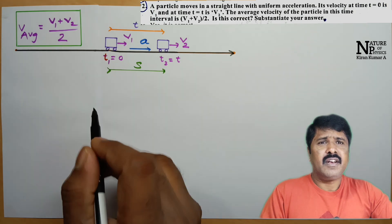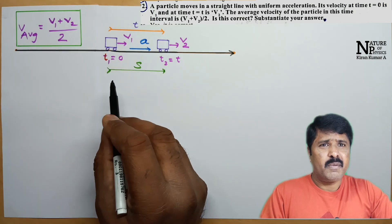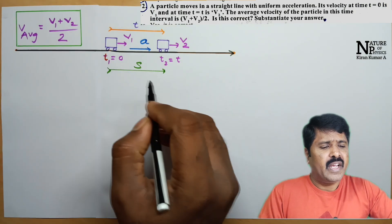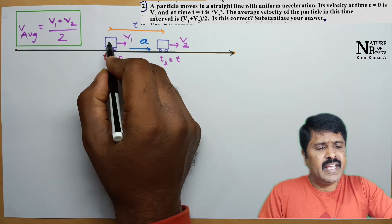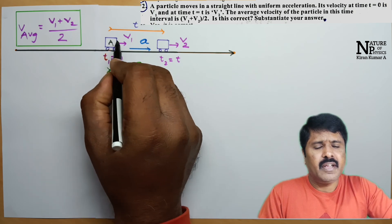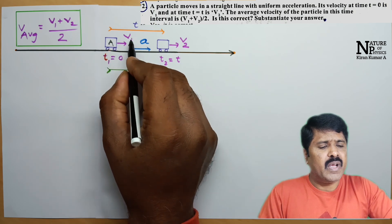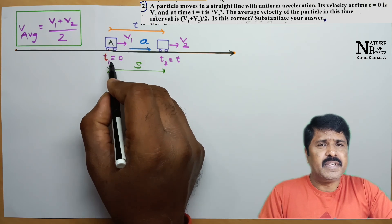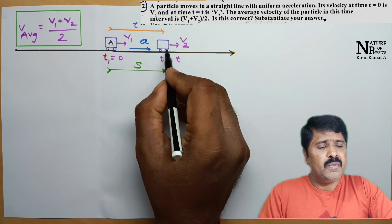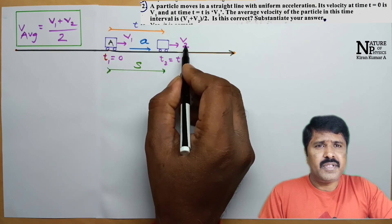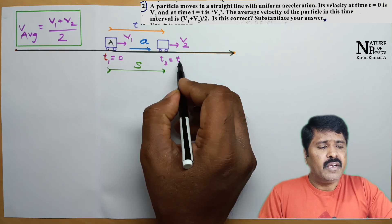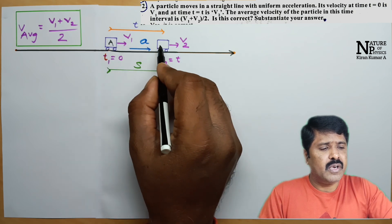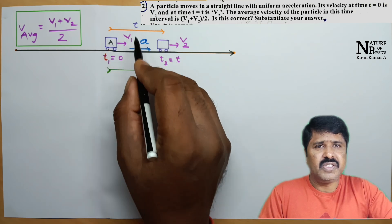Consider a body or particle moving along a straight line. Its initial position is A, with initial velocity V1 at time T equal to 0. Its final velocity is V2 after time T2 equal to T. The time taken from the initial to the final position is T.